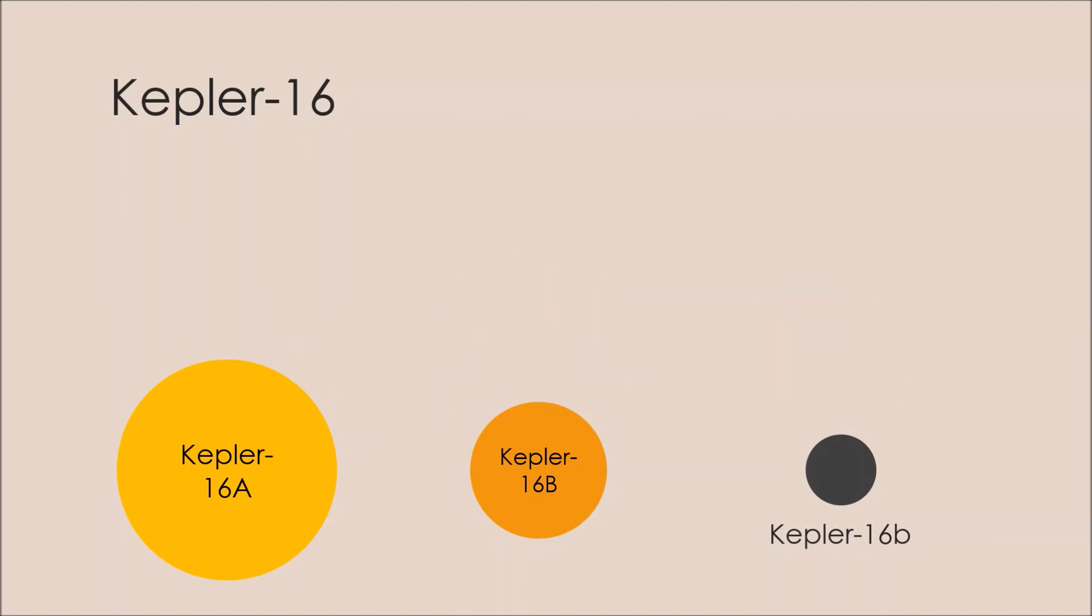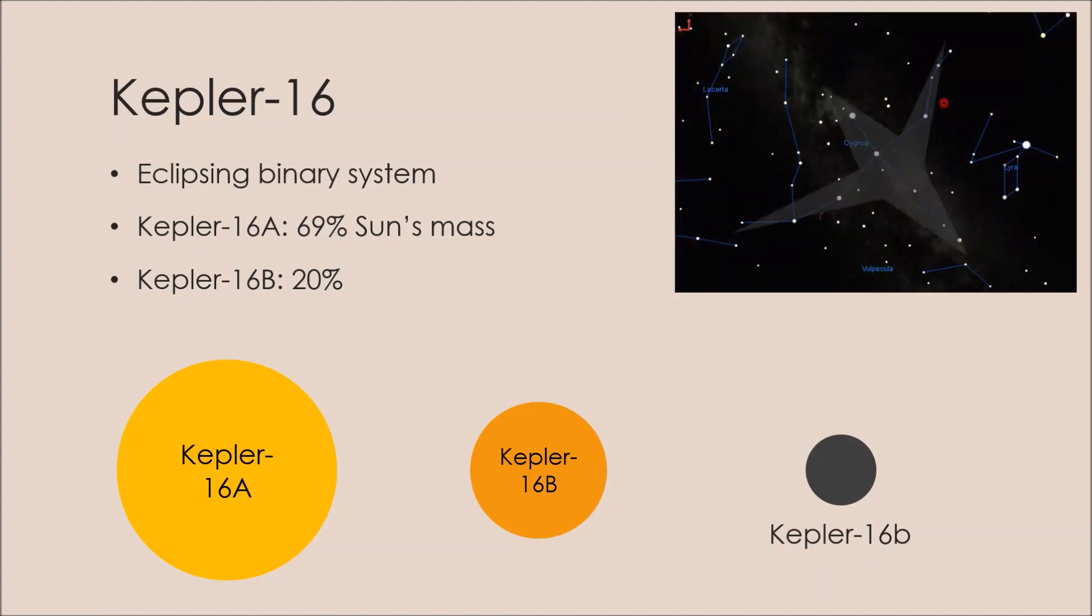As for the system Kepler-16, it is an eclipsing binary star system indicating there are two stars and their brightness dims when they block each other. The larger star has about 69% the mass of our sun, while the smaller star has just about 20% the mass of our sun. They rotate around their center of mass and line the Cygnus constellation.